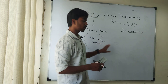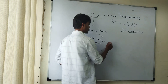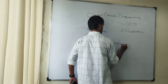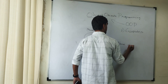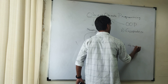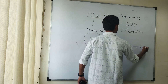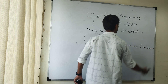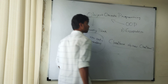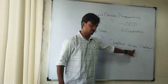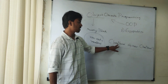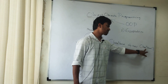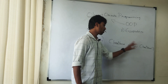Now let's remember how to create an object. To create an object, we use: class name, object reference variable, equals new operator, class name, constructor. Here, the class name is nothing but a data type, this is the reference variable, new operator, and the class name constructor.